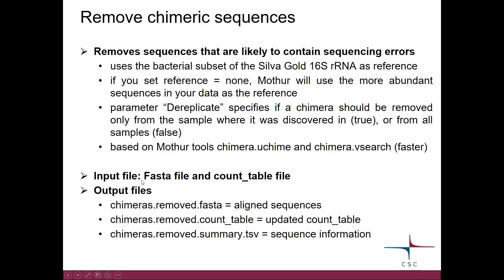Again, as input you give a FASTA file and COUNT table. As output you get a FASTA file where the chimeras have been removed, along with an updated COUNT table and summary file.